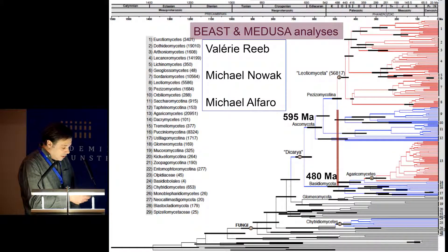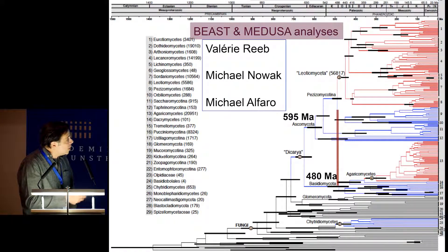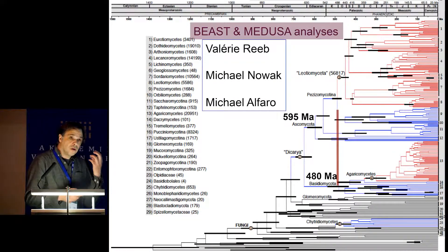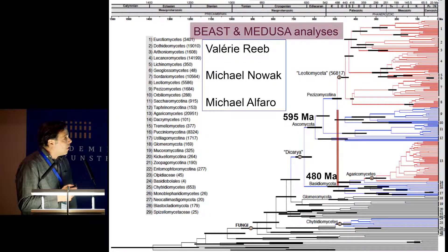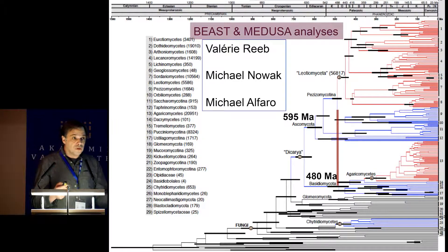Also, interestingly, the diversification of the Pezizomycotina, which is the subject of this presentation, took place more or less at the same time as the diversification of the Basidiomycota, the entire clade, around 480 million years ago. Radiations or drastic accelerations of diversification have a drastic impact on phylogenies and on biodiversity.